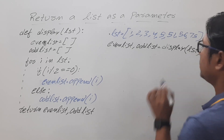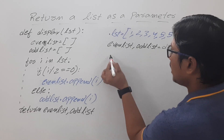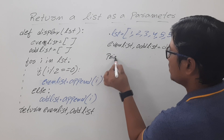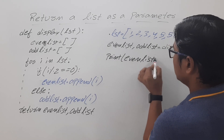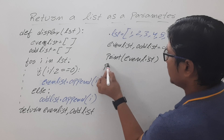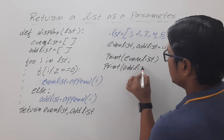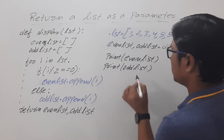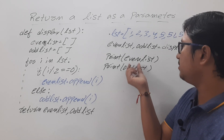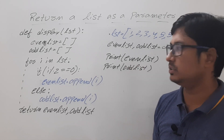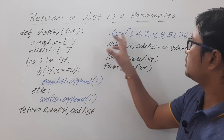Then I want to print the even list, so I simply write print even list, and then print odd list. It will display both the lists of elements which are in the even list and odd list. This is the complete program.